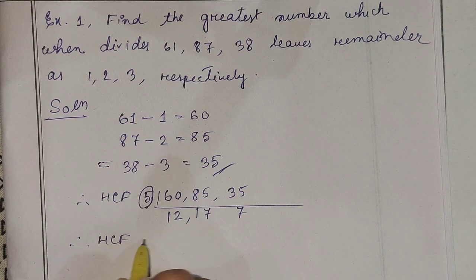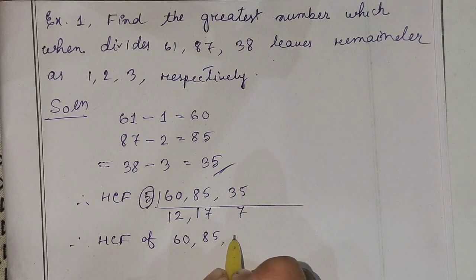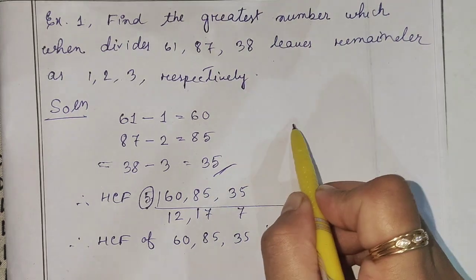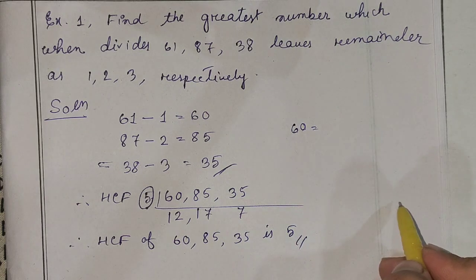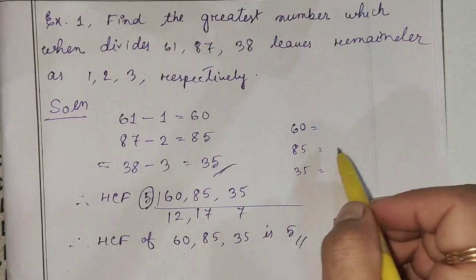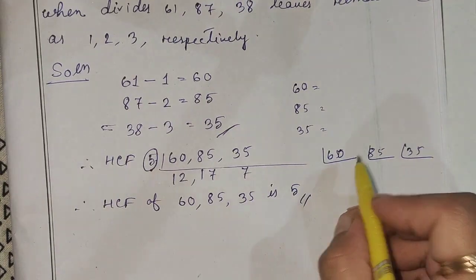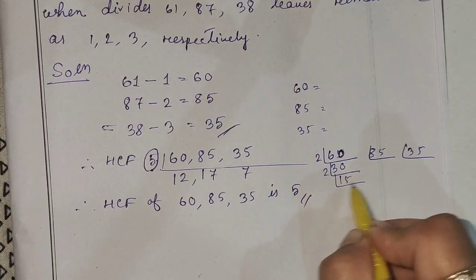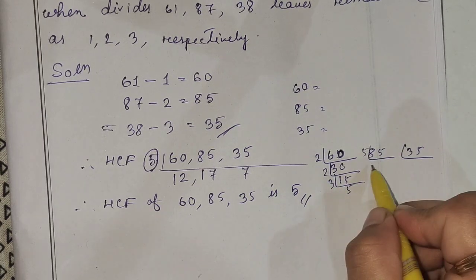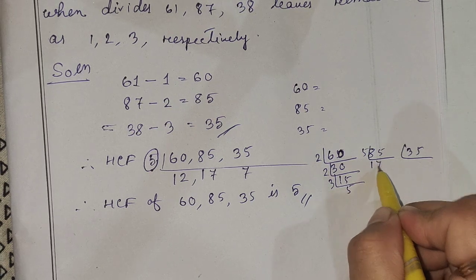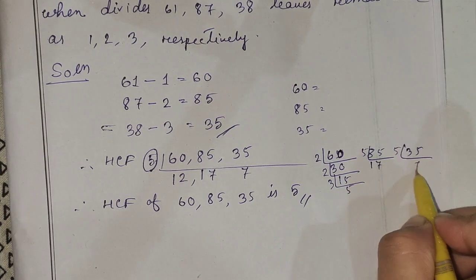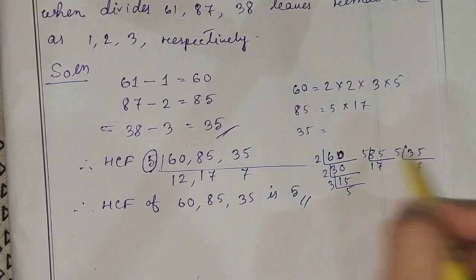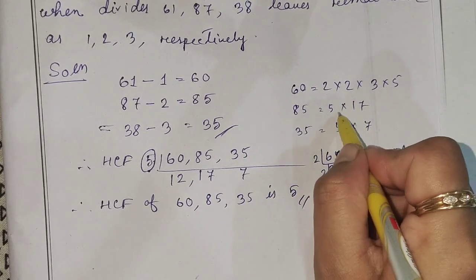This means the HCF of 60, 85, and 35 is 5. We can verify: 60 is 2 into 2 into 3 into 5, 85 is 5 into 17, and 35 is 5 into 7. The common factor is 5. So the answer is 5.